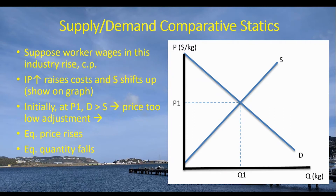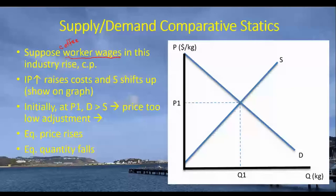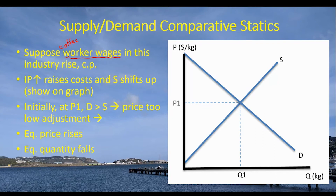Now let's talk about a change on the supply side — specifically, changes in worker wages for coffee workers. When we talk about wage changes, we're thinking about the cost of supplying a particular good. When we talk about income, we're thinking of the money consumers have already received and are now thinking about spending. So income affects demand decisions, and wages affect supply decisions.